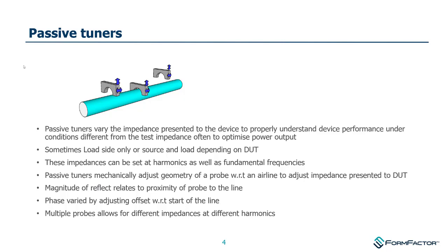Things are not quite as simple as previously presented. In some circumstances we may have complex output from the device containing several harmonics. We would like to also terminate those harmonics with known impedances. This is where things get more complex inside the tuner — it has three probes designed to create three different sets of impedances at the different frequencies of interest.